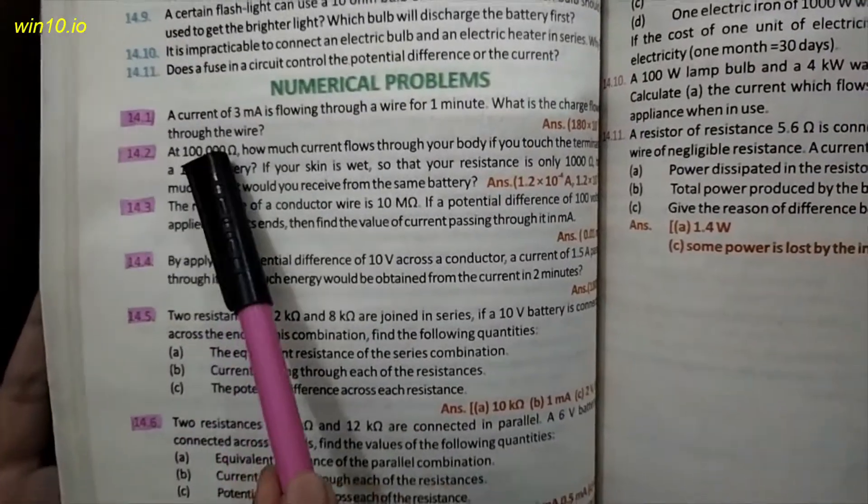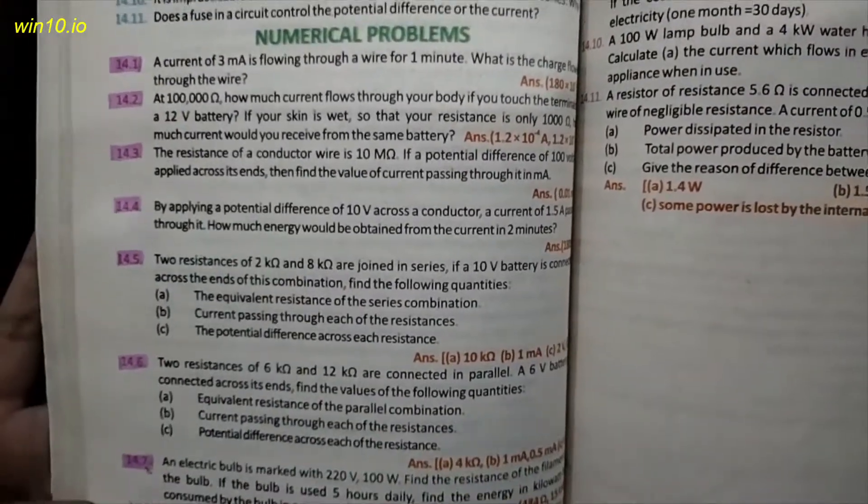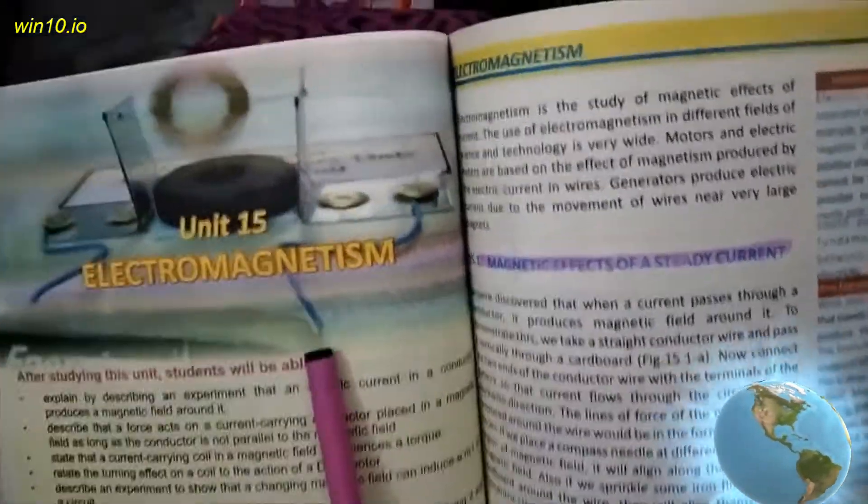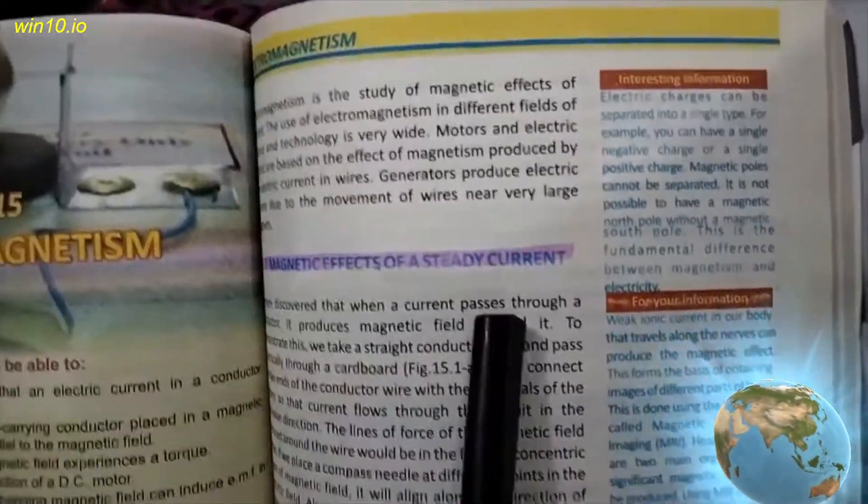Numericals 14.1, 14.7. Unit number 15, electromagnetism. Page number 119, magnetic effect of a steady current.